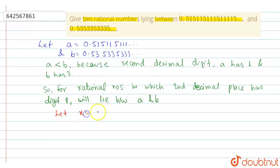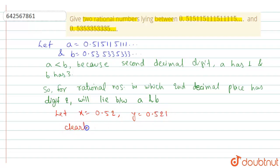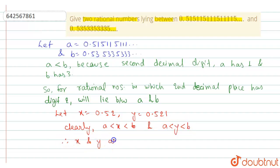For this, let x equal to 0.52 and y equal to 0.521. Clearly, a is less than x is less than b, and a is less than y is less than b. Therefore, x and y are the required rational numbers.